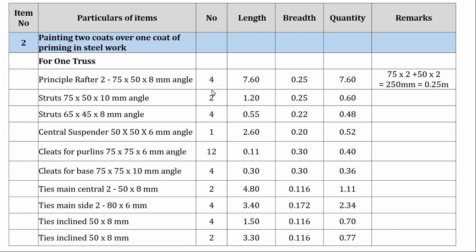Similarly, we are going to do the calculation for all the other angle sections. The numbers and length will remain the same; only the breadth has to be added. For the same 75 by 50 angle, 75 into 2 plus 50 into 2 gives 250 mm, that is 0.25 meters. For the strut, 65 into 2 plus 45 into 2 gives 220 mm, that is 0.22 meters. If you multiply, we get the respective quantities.